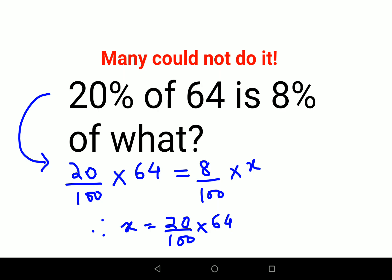Now if I want to put all the numbers on one side, I am basically multiplying this by 100 upon 8 on both sides. Right? Only then this gets cancelled and I am just left with x over here.